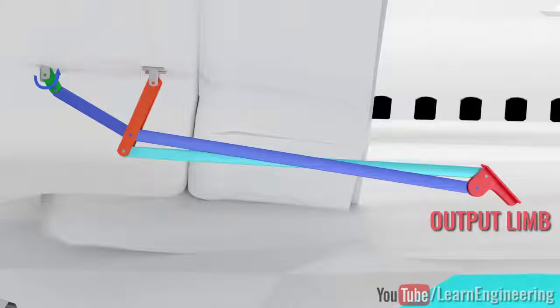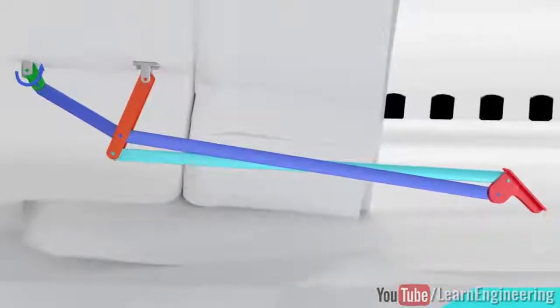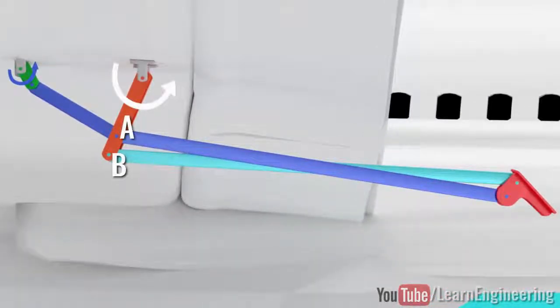Let's concentrate on points A and B on the rocker arm. It is clear that point B will have a higher speed than point A. This speed will be transferred to point C and D of the limb via the connecting arms.